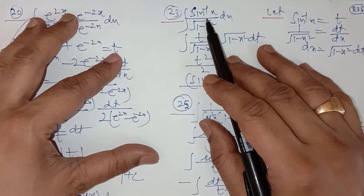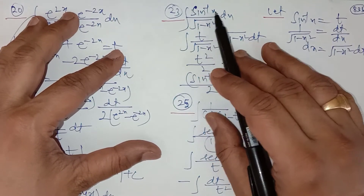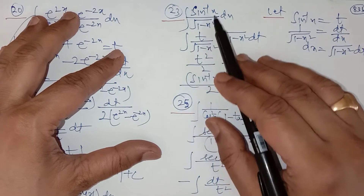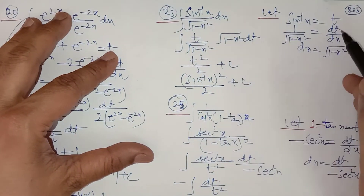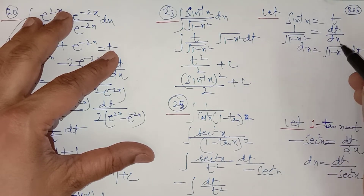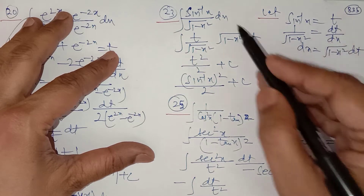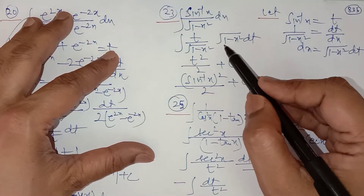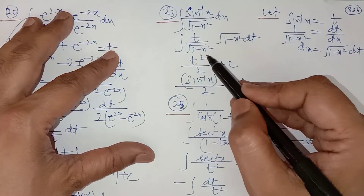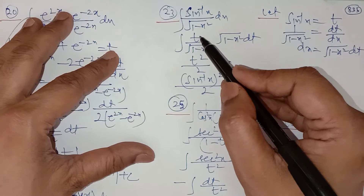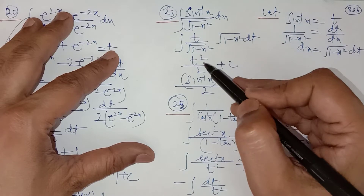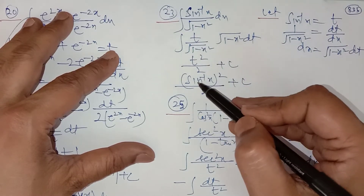Question number 23: it is clear that you have to let sine inverse x equal to t, because its derivative is 1 upon under root (1 minus x square). So let sine inverse x equal to t; dt upon dx equals 1 upon under root (1 minus x square), and dx equals dt times under root (1 minus x square). Replace the value of dx; under root (1 minus x square) cancels out. So you simply integrate t, whose integration is t square upon 2. Replace t with sine inverse x.